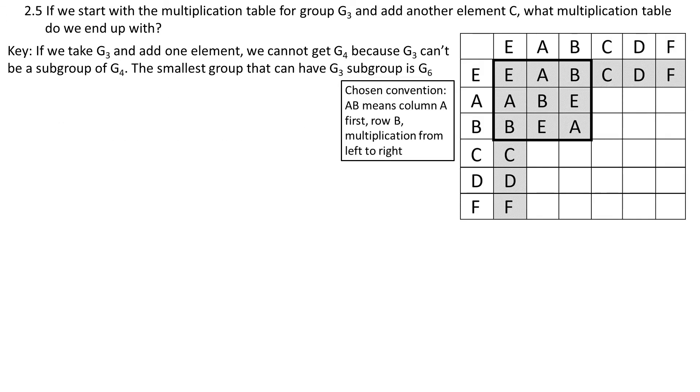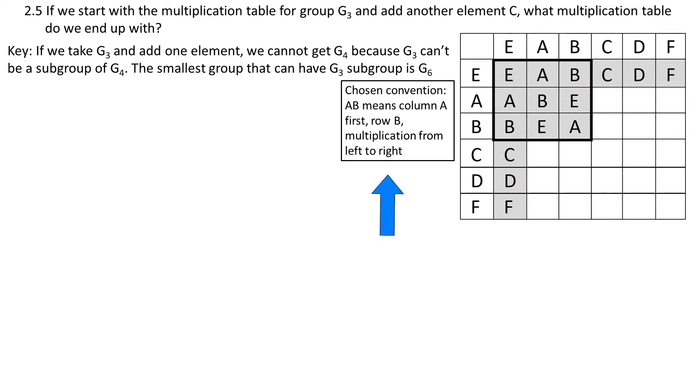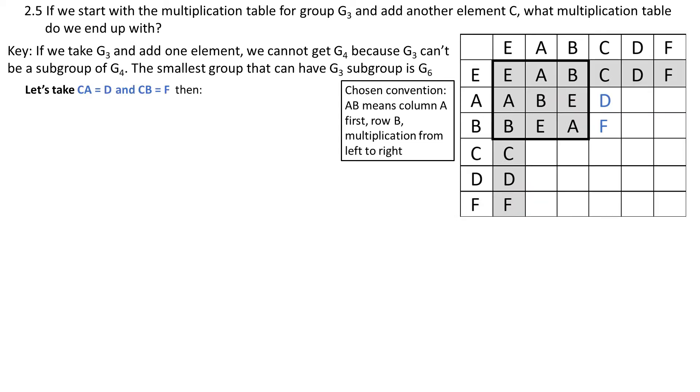So here is our Cayley table for G6. These entries we already know. The nine entries in a corner come from G3 and there is only one G3 group and it is cyclic. We have A, A times A is B, A times A times A is BA or AB which equals E. A four times is A and so the cycle repeats. Please notice the convention we are using. In this video AB means multiply column A by row B. The second convention is that the multiplication is from left to right. There are books where it is the other way around with analogy to function composition.